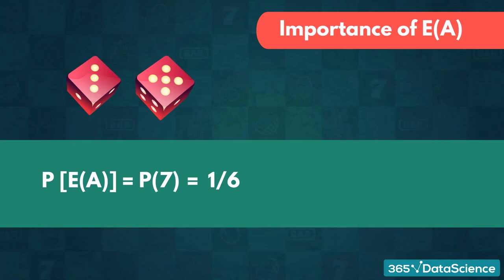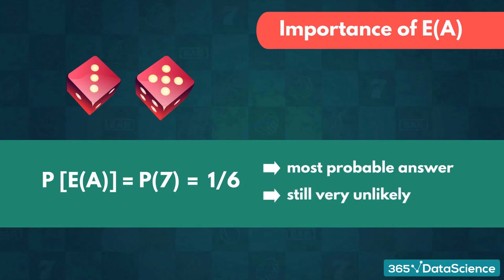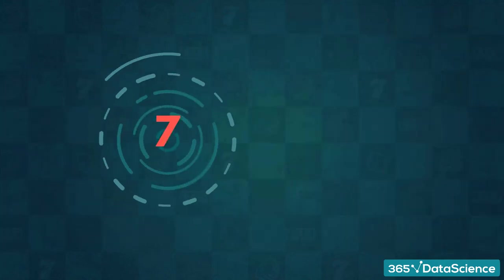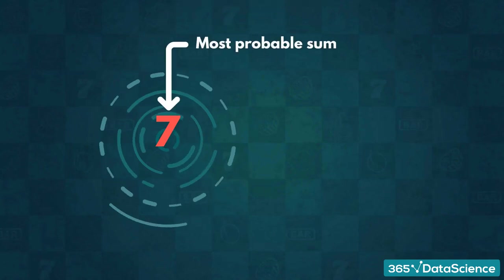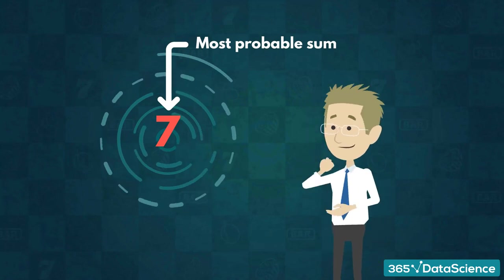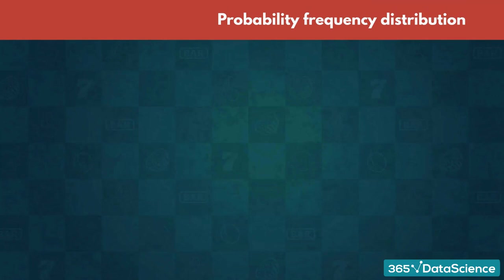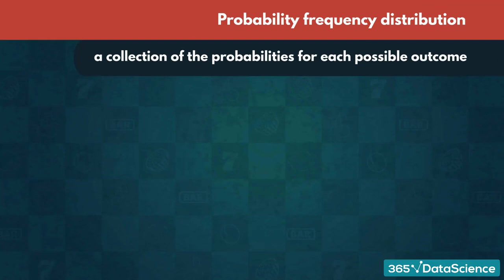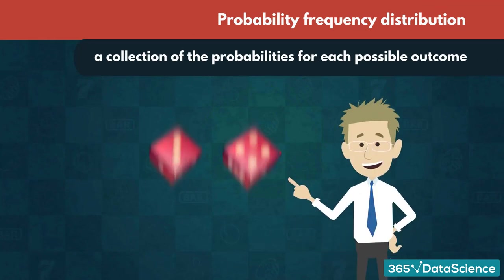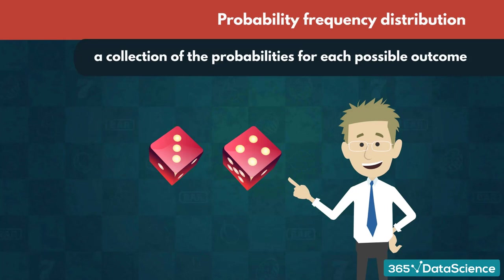The sum being equal to 7 might be the most probable answer, but it is still very unlikely to occur. Thus, we cannot reasonably bet on getting a sum of exactly 7. Moreover, even though we are suggesting 7 is the most probable sum, how can you be sure? What we can do is create a probability frequency distribution. Simply put, a probability frequency distribution is a collection of the probabilities for each possible outcome. That's how I know that 7 was the most probable sum of two dice. We are going to construct one right now.